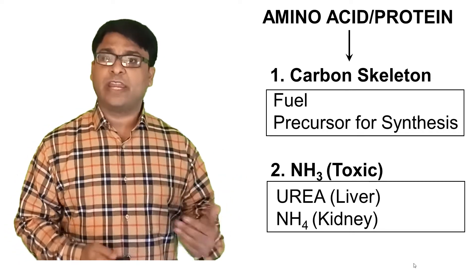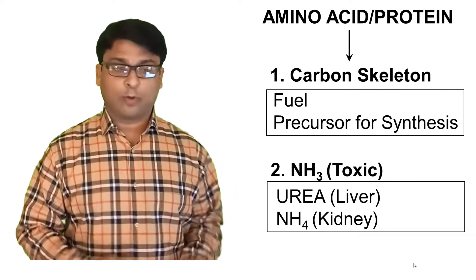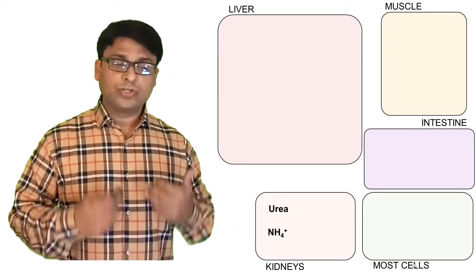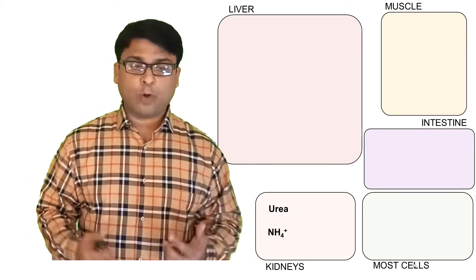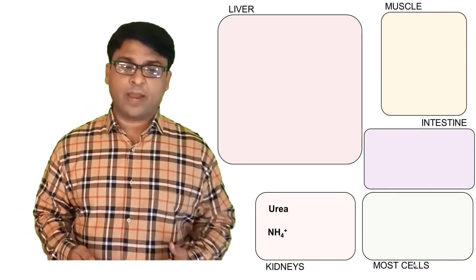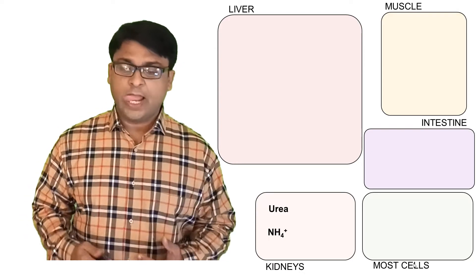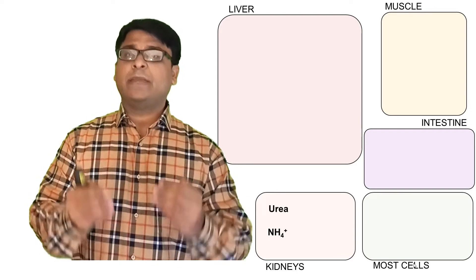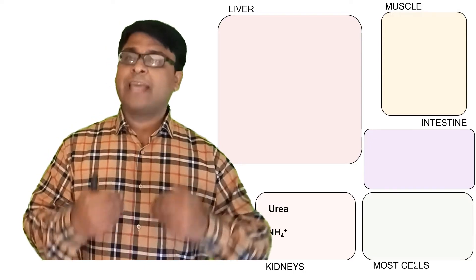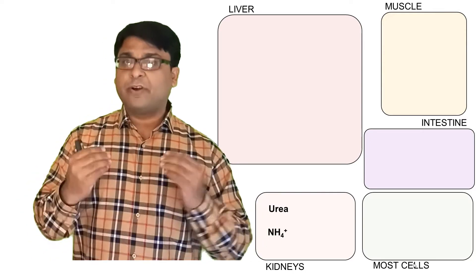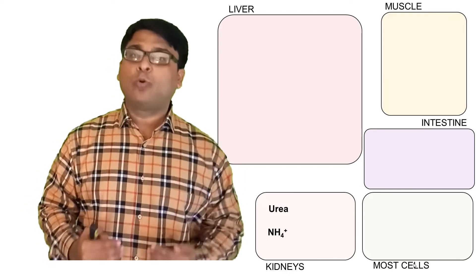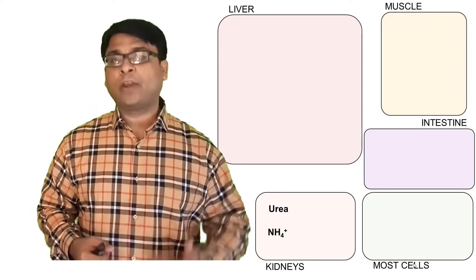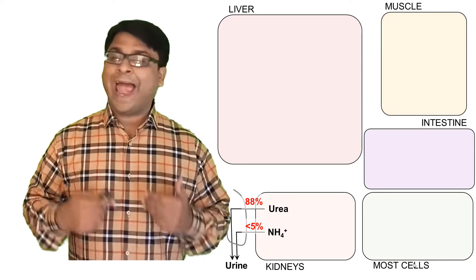Now let's move on to understanding how amino acid metabolism actually takes place. On this diagram you can see different types of cells — kidneys and most cells of the body, intestinal cells, muscle cells, and liver cells. Ammonia has to be taken out of the body either in the form of urea from the liver, or as ammonium from the kidneys.